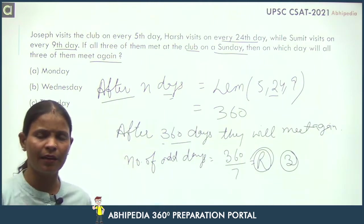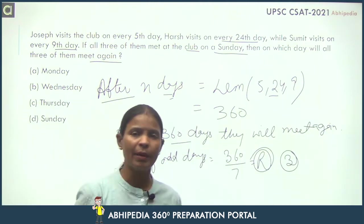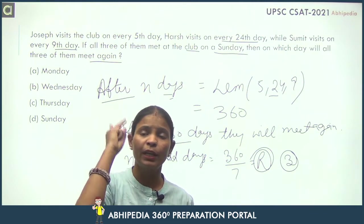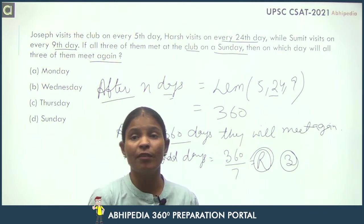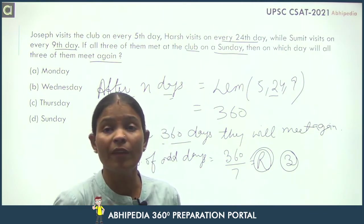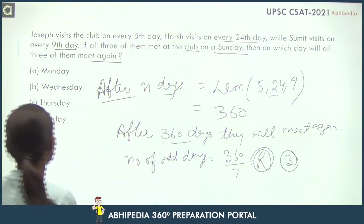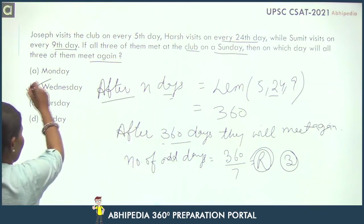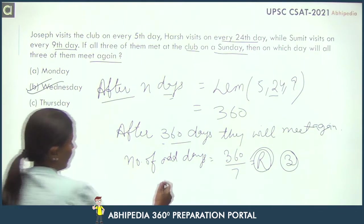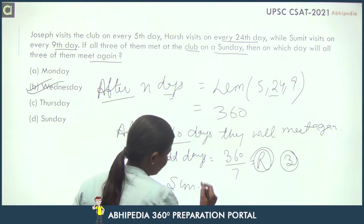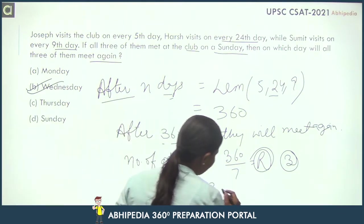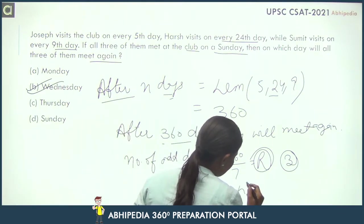Now add 3 to Sunday: Sunday plus Monday, Tuesday, Wednesday. That means they will meet on Wednesday. We added 3 to Sunday and we get Wednesday.